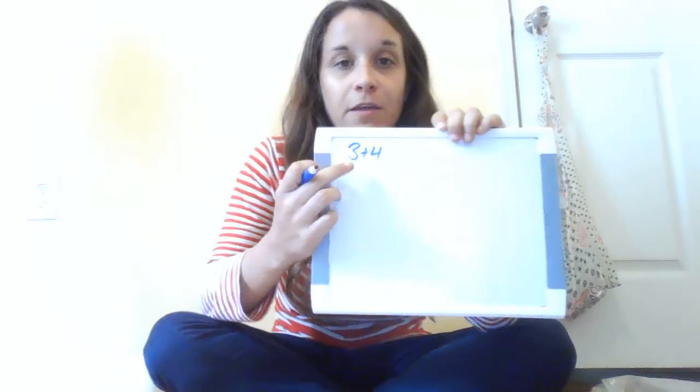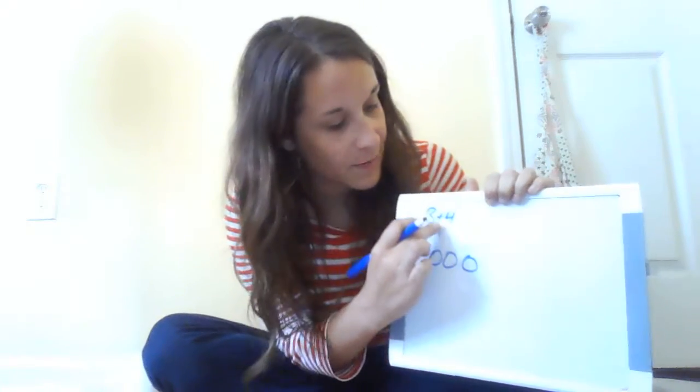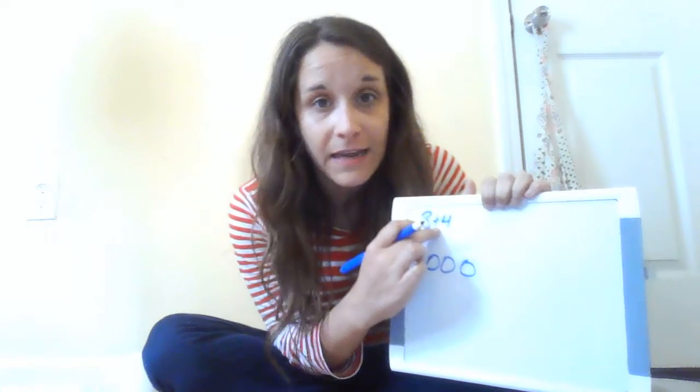So the first strategy we're going to talk about is drawing. My first problem is going to be 3 plus 4. To draw that, I want to make sure that I am paying attention to that first number. I see 3, so I'm going to draw 1, 2, 3 circles. Then I need to pay attention to the sign — there's a plus sign, so that means I need to add some more.